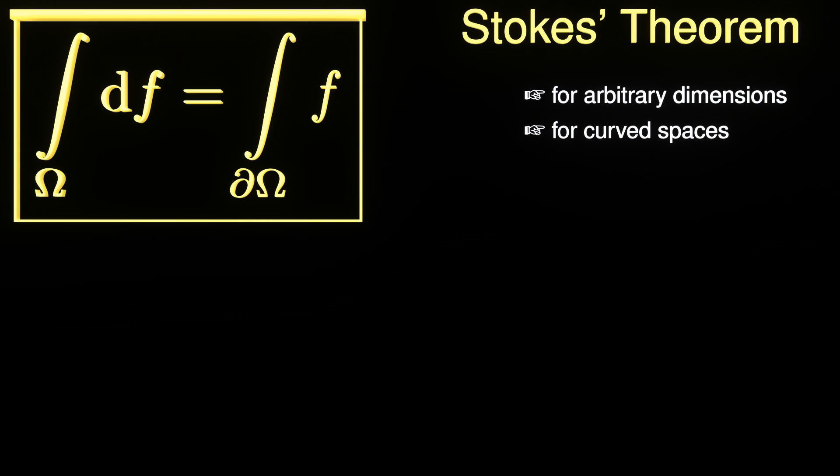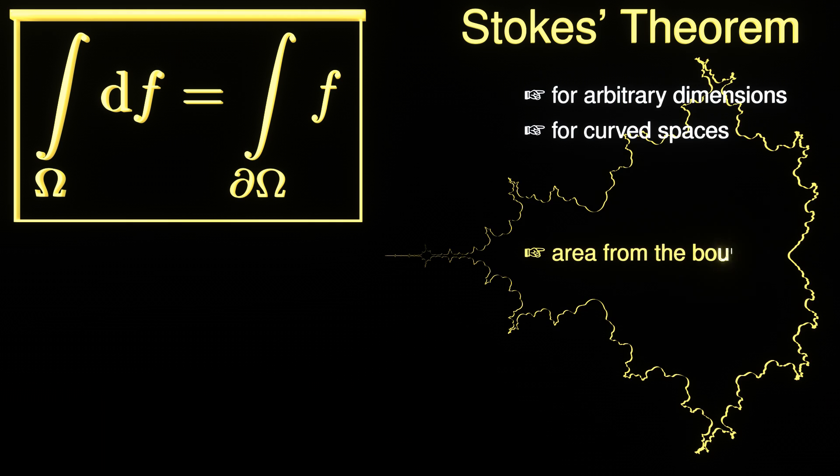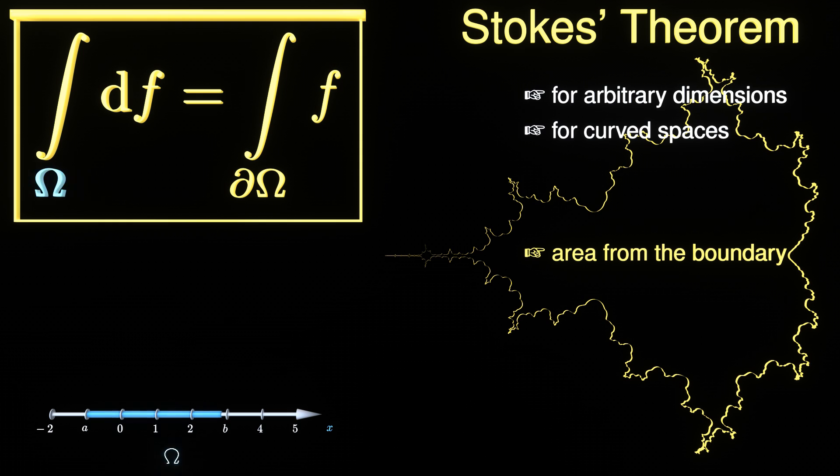The letter omega represents an arbitrary domain of integration. It can be as complicated as the Mandelbrot set, or some abstract seven-dimensional manifold, or even the entire universe, but it could also be as simple as an interval along the real axis.